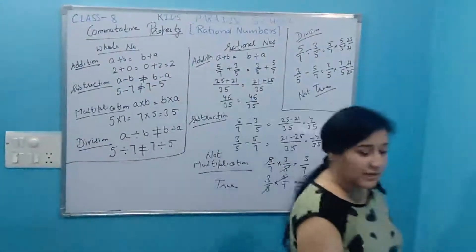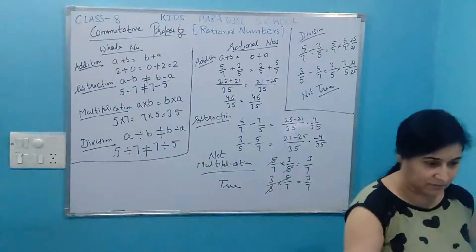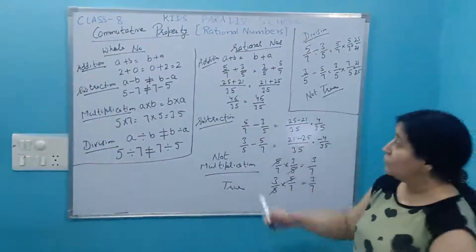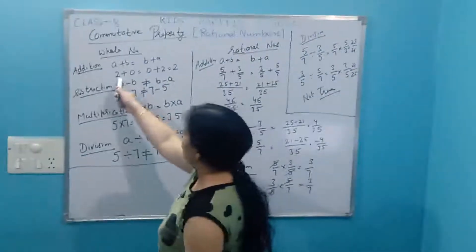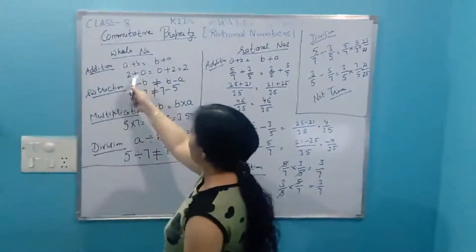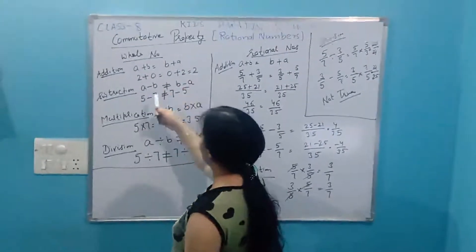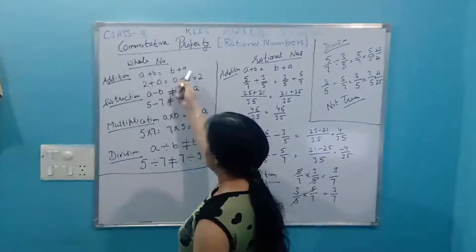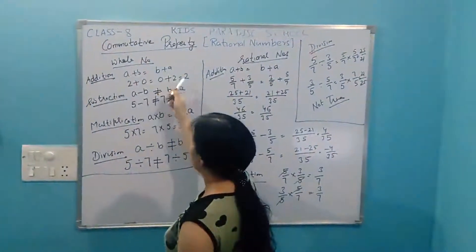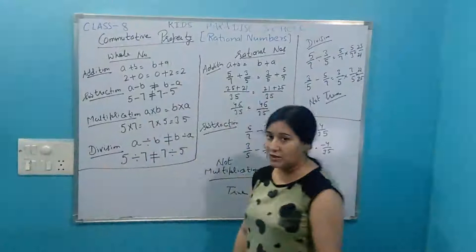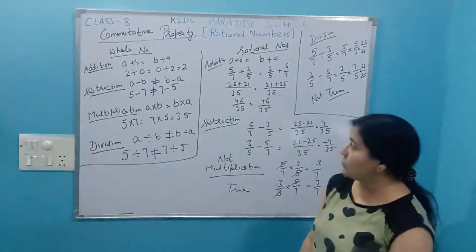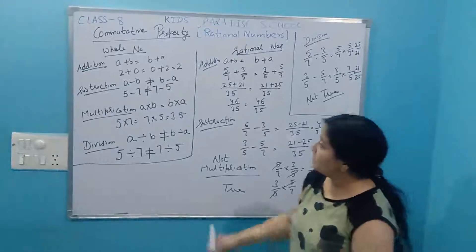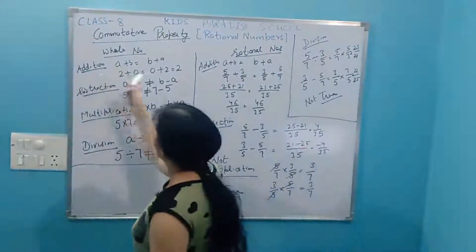Suppose two numbers can be named as a and b. I have two whole numbers: 2 and 0. So two plus zero equals two. If I change the order — a plus b versus b plus a — then 2 plus 0 is 2, and 0 plus 2 is also 2. So the commutative property under addition is true for whole numbers.